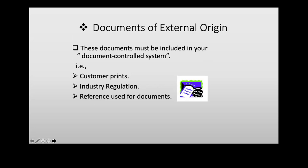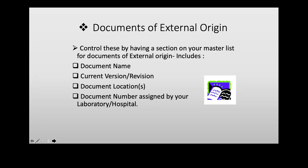External documents also need to be controlled — such as industry regulation references and your ISO 15189 manual. Control these by having a section on your master list for documents of external origin. This section should include document name, document location (especially if you have multiple labs or multiple areas), and a document number assigned by your laboratory or hospital.